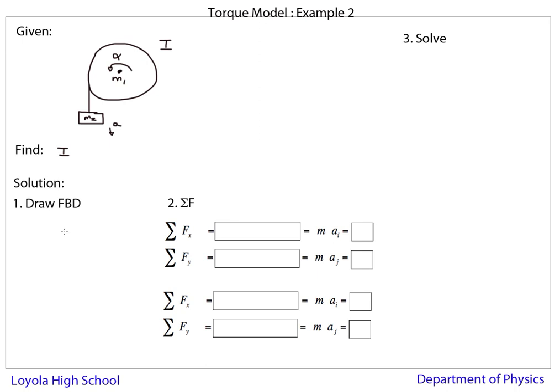So again, this is basically a force model type problem except it's a rotational force. But I'm going to go ahead and draw an FBD. In this example, I'm going to draw two FBDs, one of each object. So, here's the wheel.